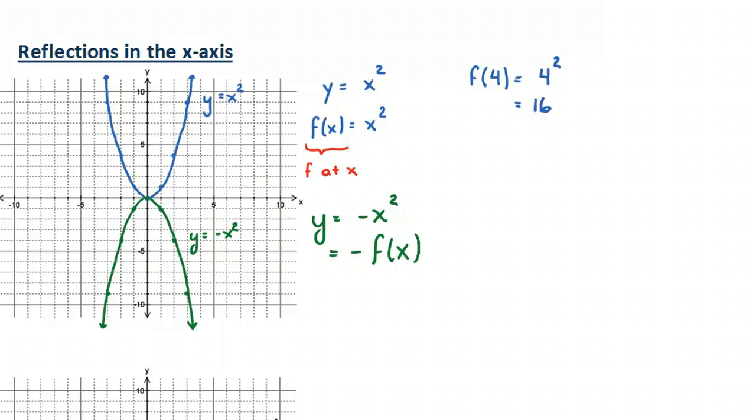So notice, what this is suggesting here is that we are multiplying all y values of the relationship y equals x squared by negative 1.